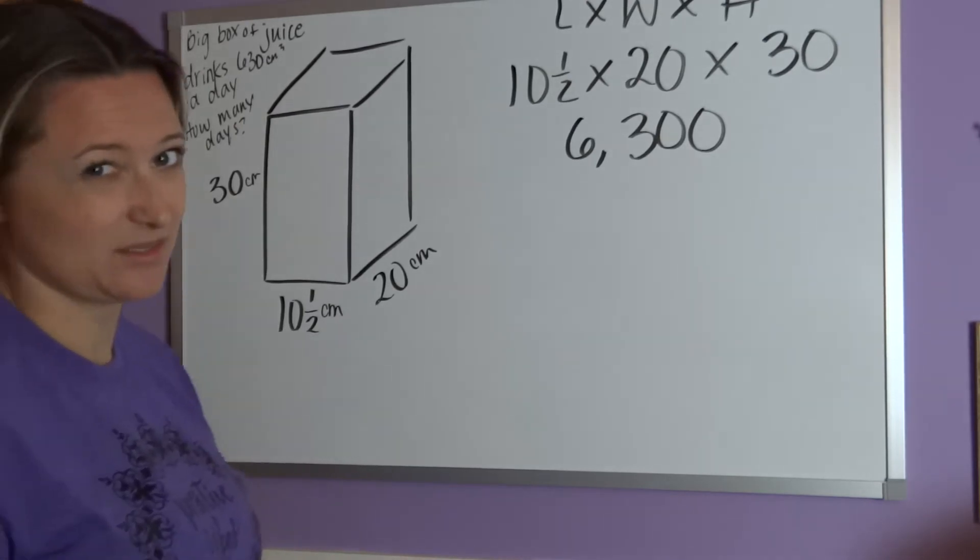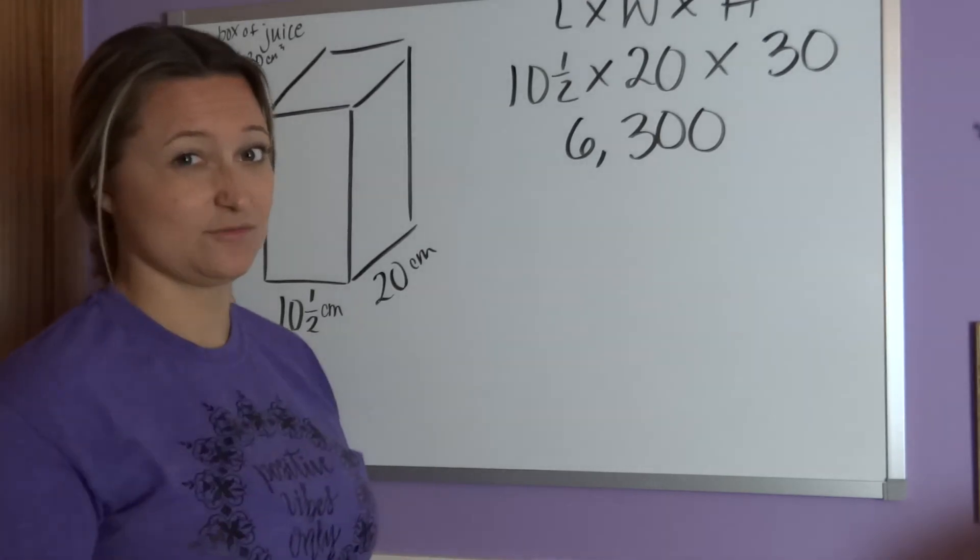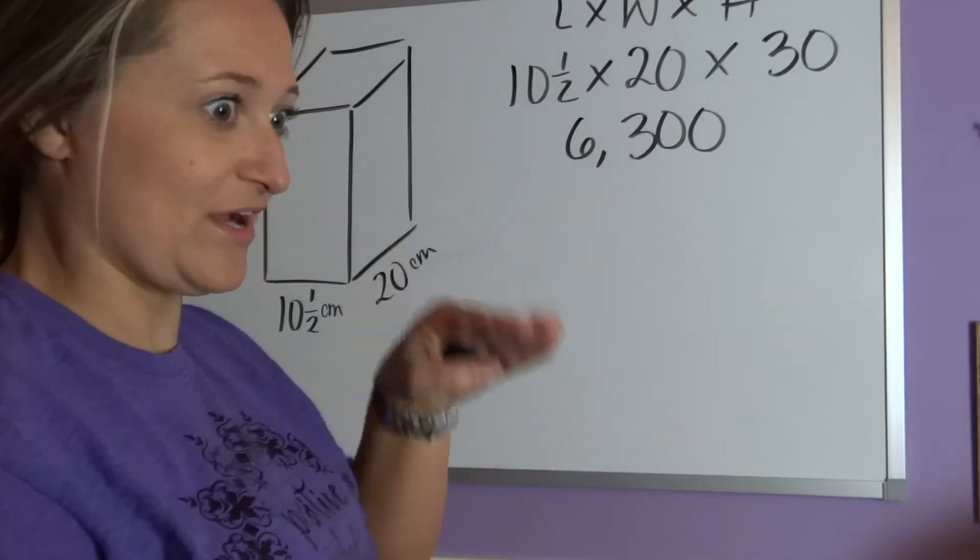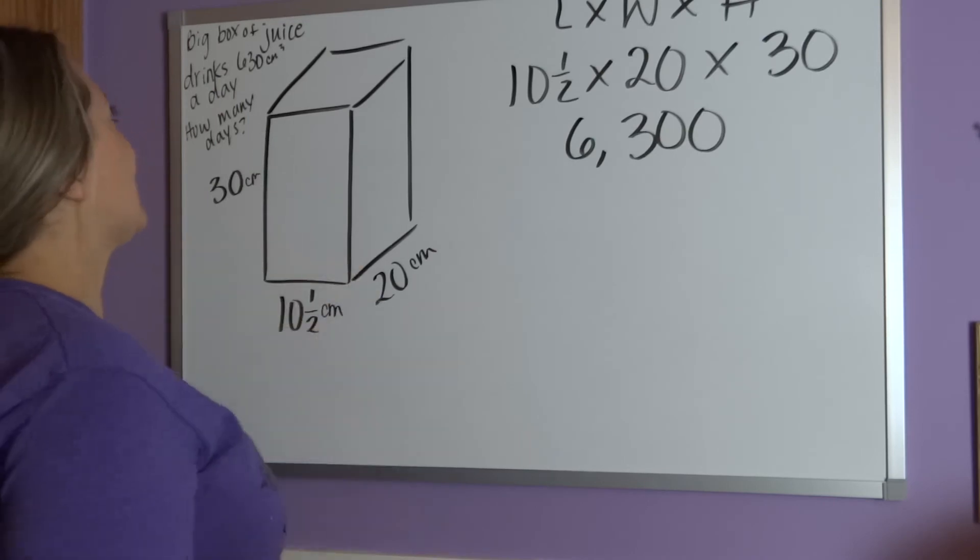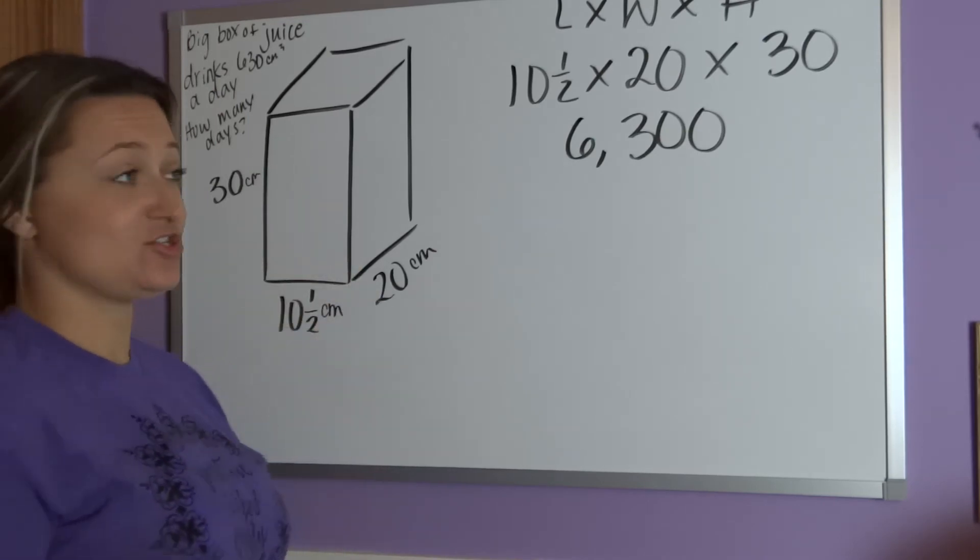Same thing, right? Milliliters and centimeters cubed. Remember when we did the volume in the little graduated cylinders thing? Same idea. Anyways, we're going to have to divide this by how much juice he's drinking a day.